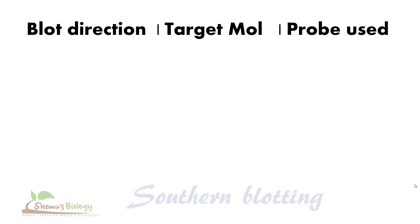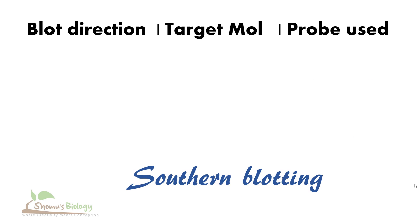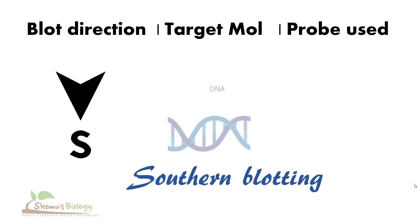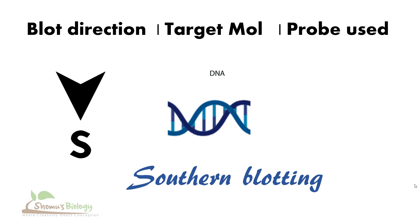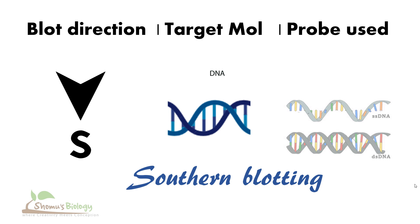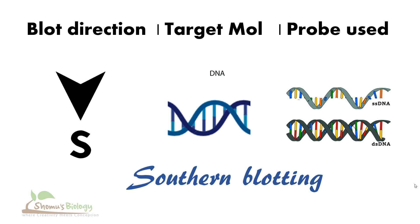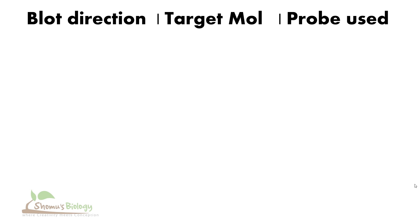The third kind is southern blotting, and it is a very common one — the old one, which is somewhat obsolete these days. Southern blotting is used to detect the presence of DNA, utilizing single stranded DNA as a probe, specifically radioactive single stranded DNA.